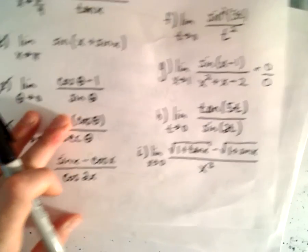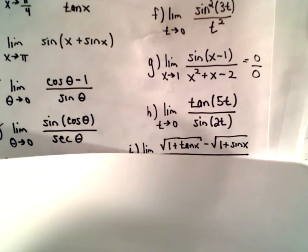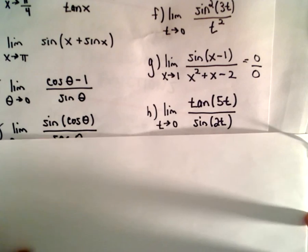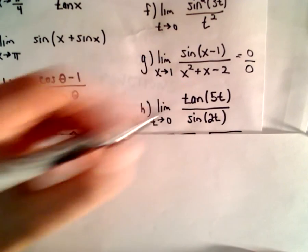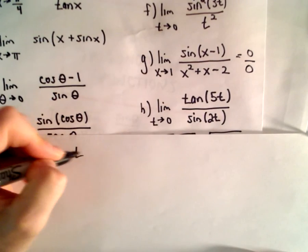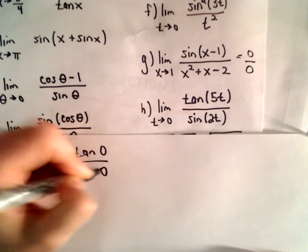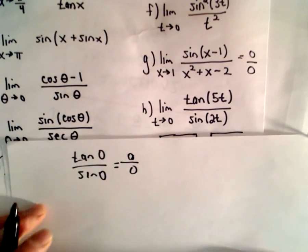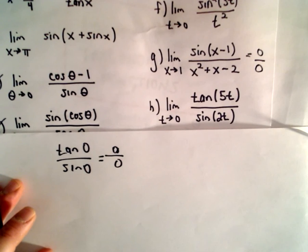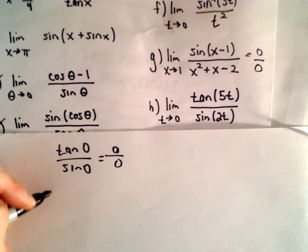Let's do one more — part H — because it uses the same ideas. If we substitute t equals 0, we're going to get tangent of 0 over sine of 0, which is 0 over 0. So we're going to have to do some more work, and we'll make use of those limit results again.